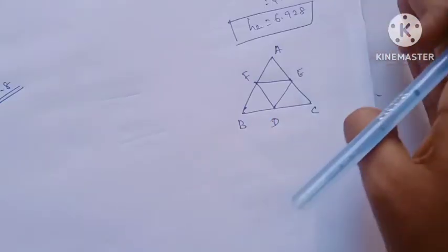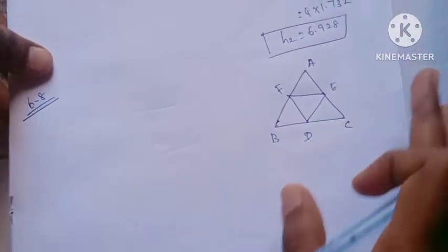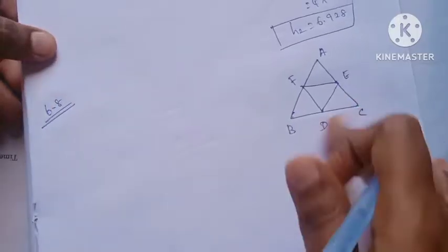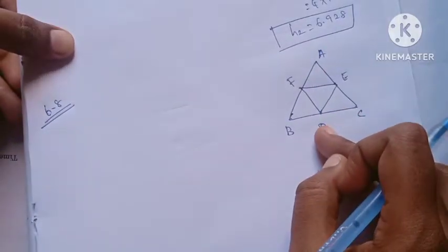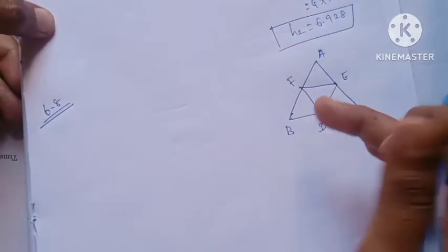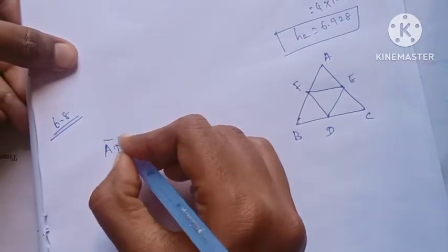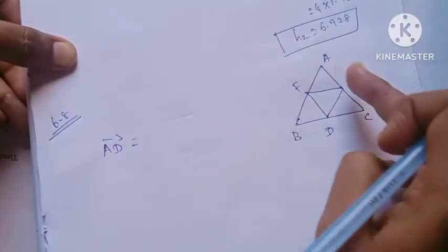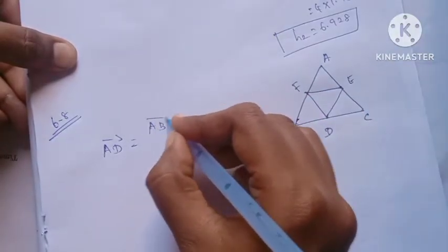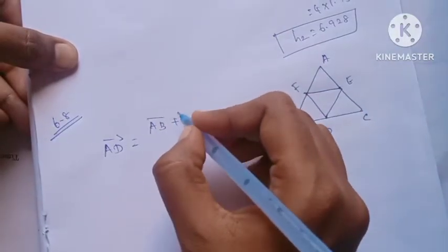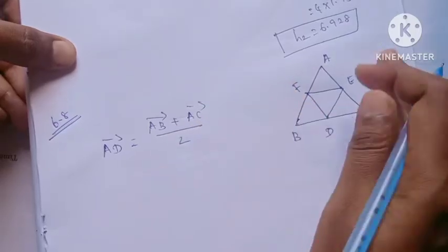So first of all, what do we need to do? We find the AD vector. AD vector is equal to (AB + AC) / 2. So this is the last step: AC vector divided by 2.